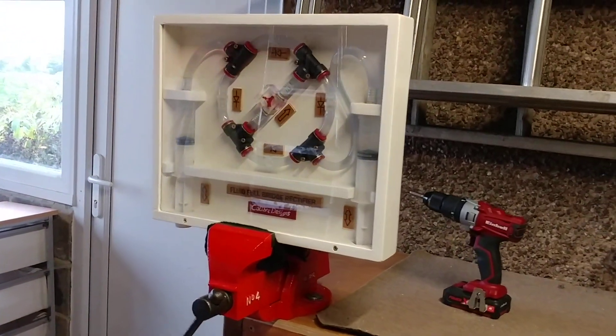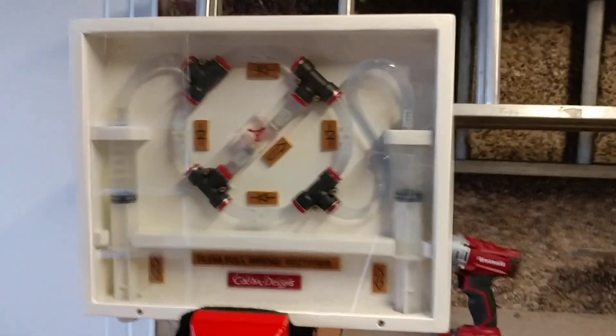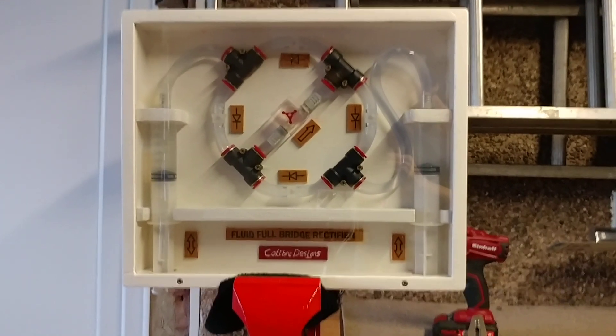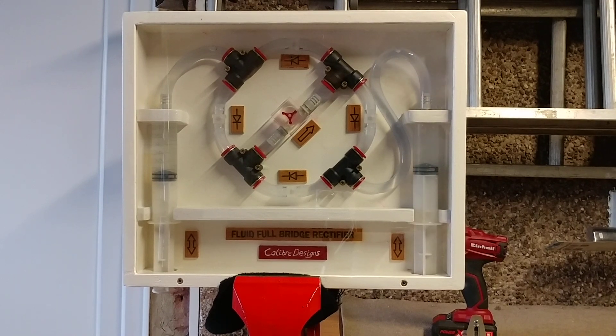This is my take on a full bridge rectifier which uses water rather than electricity. It's built mainly from 18mm ply with 16mm tubing and uses a pair of 100mm syringes to pump water around the pipe system.